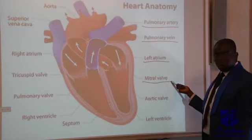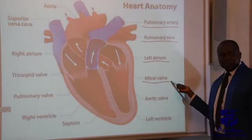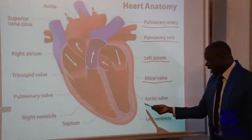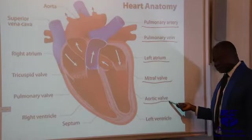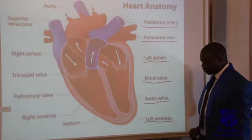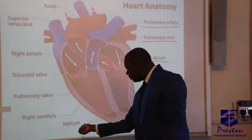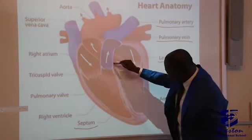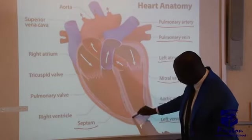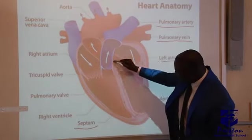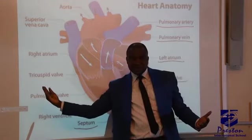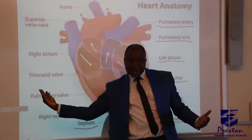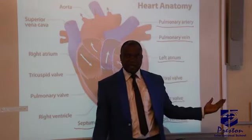The mitral valve or bicuspid valve — we are saying the same thing, don't forget that. Then we have the aortic valve, and the left ventricle. Then we have the septum, which is a major muscle that separates our heart into two halves — to the right hand side and to the left hand side.